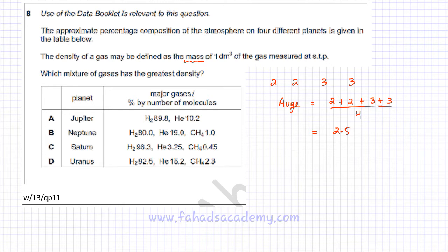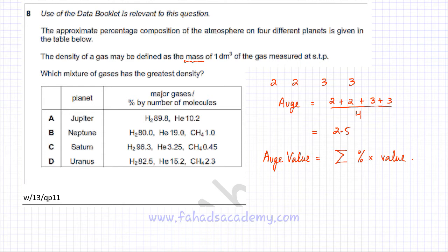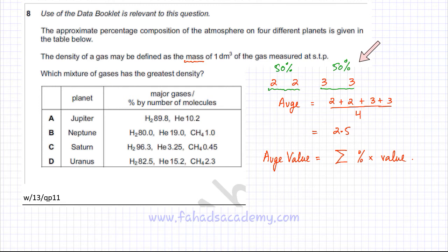Now, there's another method of calculating the average value. The average value is basically equal to the percentage of a particular value multiplied by that value, and you sum them all up. For example, looking at those four values, you have two distinct values: 2 and 3. The number 3 appears 50% of the time in your sample, and the number 2 also appears 50% of the time.